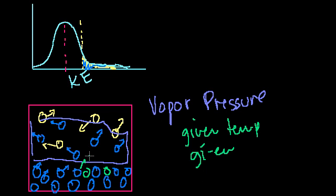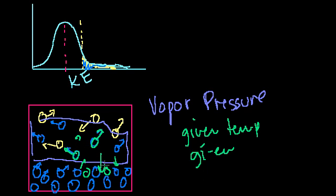Vapor pressure is the pressure created — at a given temperature for a given molecule — where you have an equilibrium: just as many things vaporizing as going back into the liquid state. Every type of substance will have a different vapor pressure at different temperatures. And we know that the more pressure you have, the harder it is to vaporize even more. At 100 degrees at ultra-high pressure with water, you'd still be in the liquid state. The vapor creates some pressure, and vaporizing keeps happening depending on how badly the liquid wants to evaporate, until equilibrium is reached.